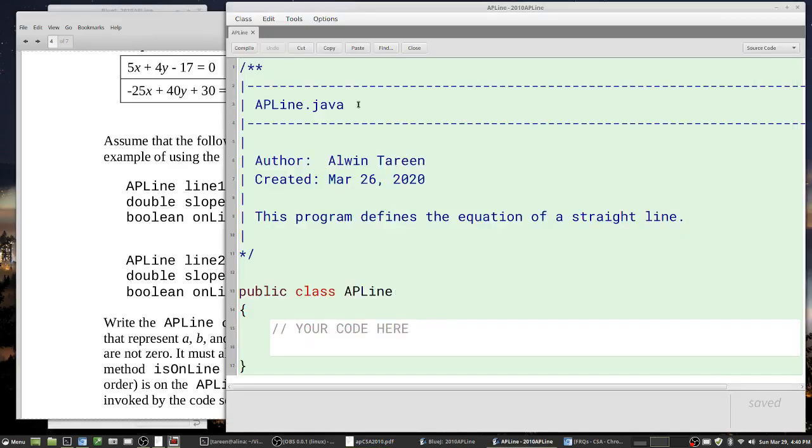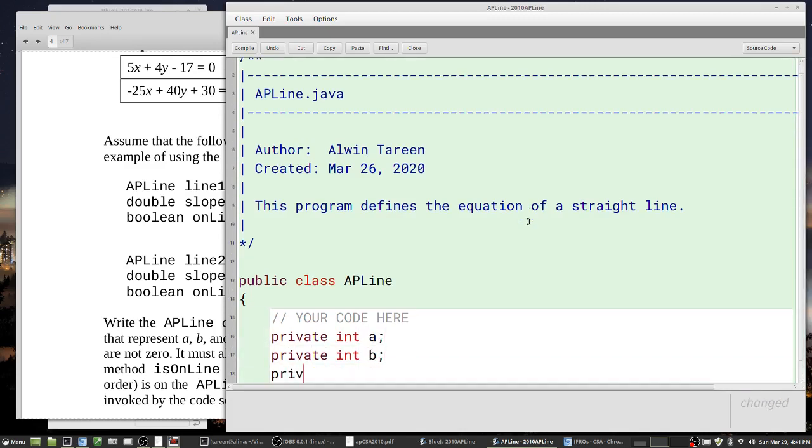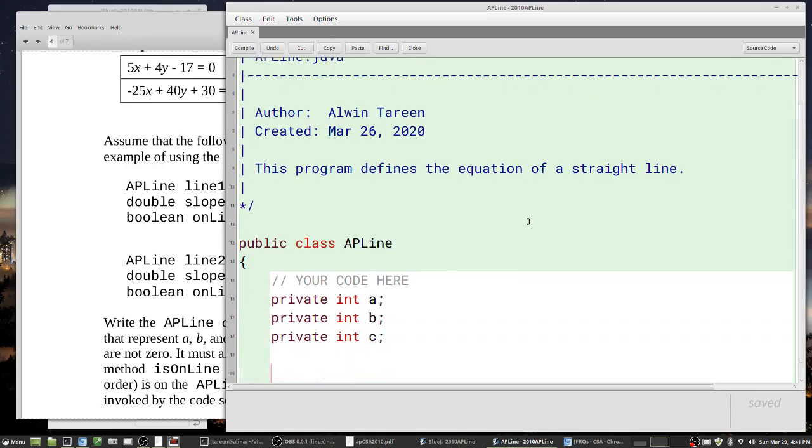The thing about these instance variables is they're always declared private. A good rule of thumb is that everything is declared public in Java except for the private instance variables - those are the only things that are declared private. We get private int a, private int b, and private int c. We just declared our three instance variables.